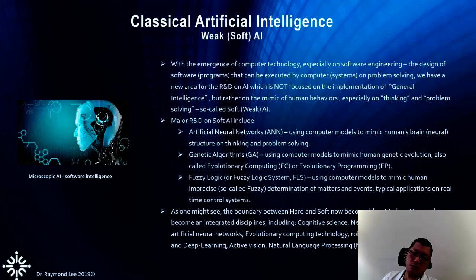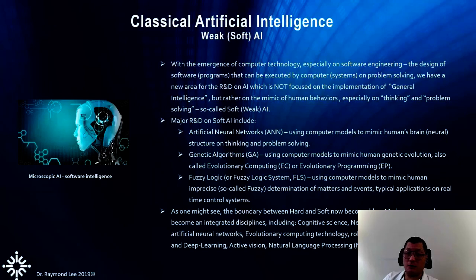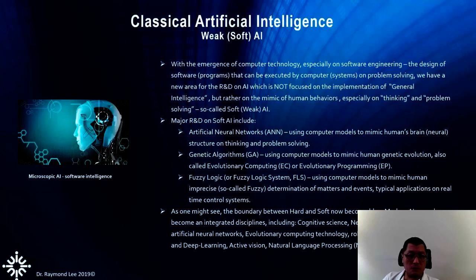Modern AI now becomes an integrated discipline including quantum science, neuroscience, biological and artificial neural networks, evolutionary computing, robotics, data mining, deep learning, natural language processing, and many more things all related to AI. As many people are saying, AI should now become a new school of learning — in fact in Europe especially in Germany and Switzerland, some universities have AI colleges with faculties covering data mining, AI, robotics, and neuroscience.